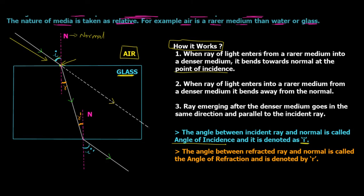Point one: when a ray of light enters from a rarer medium into a denser medium, it bends towards the normal at the point of incidence. The ray starts in air — a rarer medium — and enters the denser glass. Instead of continuing straight, it bends towards the normal and makes a new angle known as the angle of refraction, denoted by r.